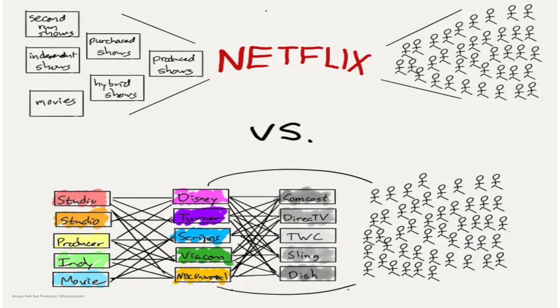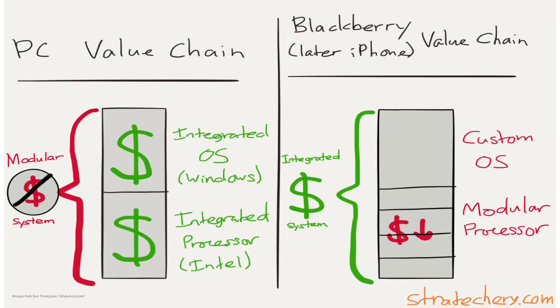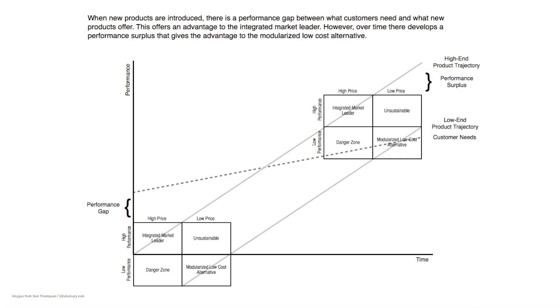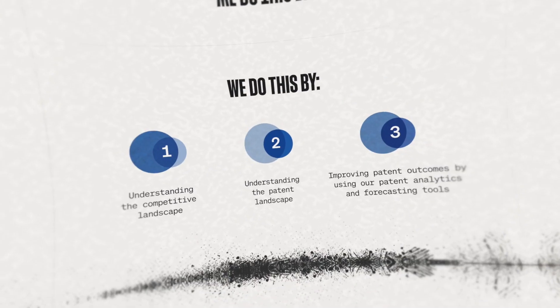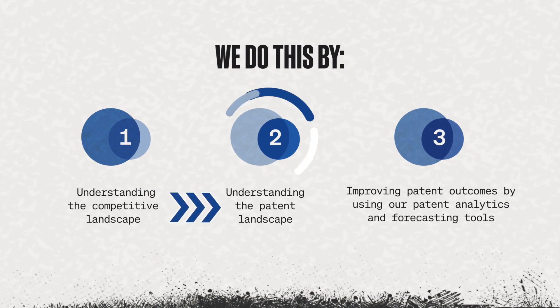We then figure out which portions of the value chain will become commoditized over time and which portions will become valuable. We also want to think about how incumbents will try to protect their turf and how new entrants will try to gain market share, and we want to have strategic patents at all of these levels so that we can protect ourselves as the competitive landscape changes and evolves.